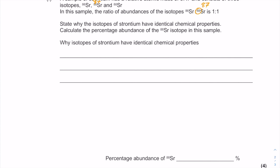So to read through the question then: a sample of strontium has a relative atomic mass of 87.7 and consists of three isotopes, 86Sr, 87Sr, and 88Sr. In this sample, the ratio of abundances of the isotopes 86Sr and 87Sr is 1:1. State why the isotopes of strontium have identical chemical properties. Calculate the percentage abundance of the 88Sr isotope in this sample.